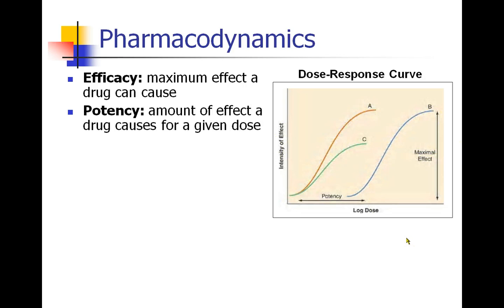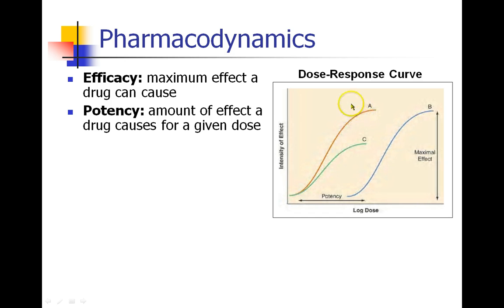We also have potency — the amount of effect a drug causes for a given dose. So when I give a milligram of drug, how much effect can I get? Here's a drug where I give a certain amount of milligrams and get that effect. If I want to get that same effect with drug B, I have to give a lot more milligrams. So which drug is more potent? Drug A is more potent because I don't need as much drug to get the same effect.